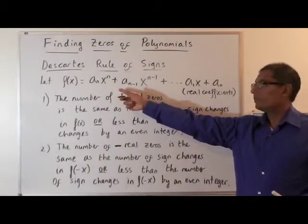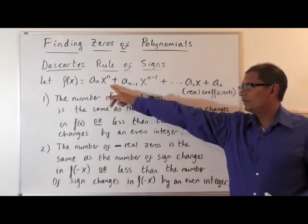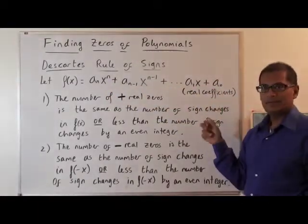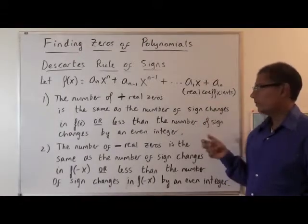It says if we have a polynomial, a_n times x to the n and so on, all the way down to a_0, the coefficients are real in this case, not necessarily integer coefficients.